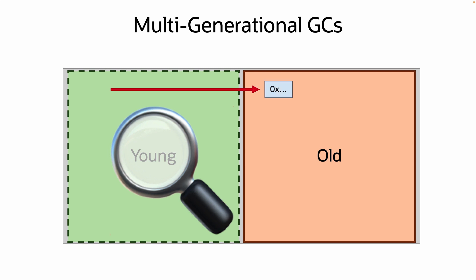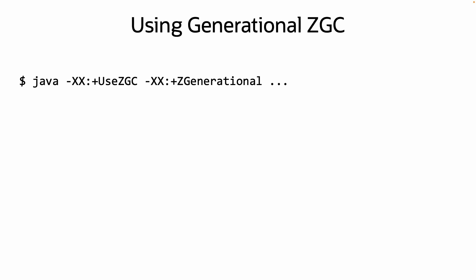This makes the GC more CPU efficient, as it's spending more time scanning an area of the heap likely to be populated with dead objects. To use Generational GDC requires passing two VM arguments: plus use GDC and plus zgenerational.